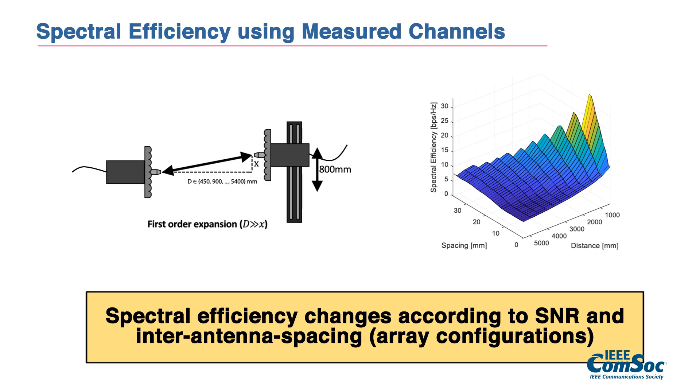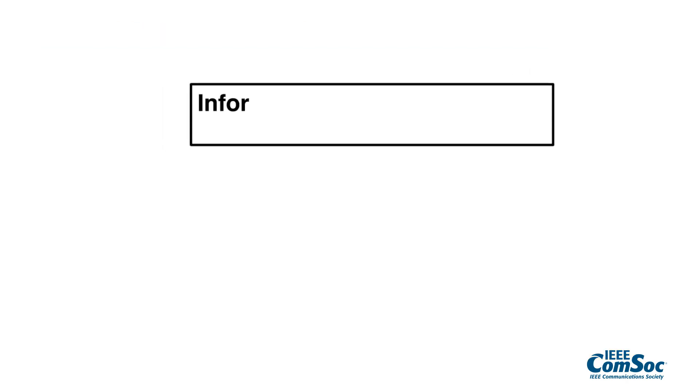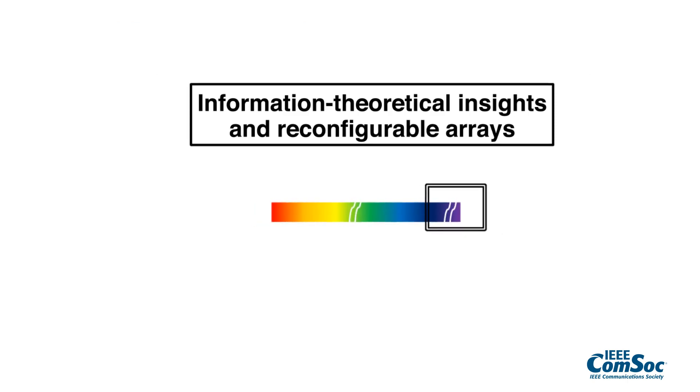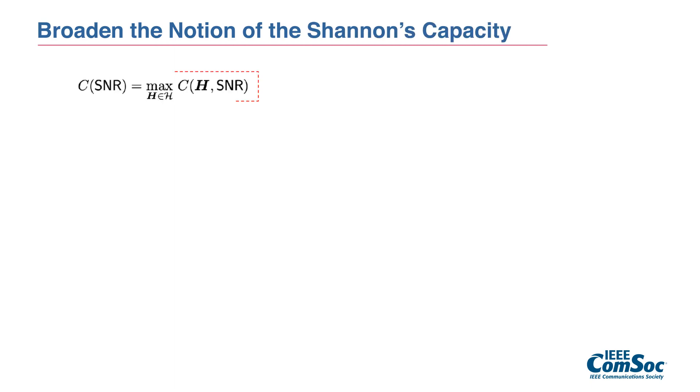As you can see, one interesting observation is that even at the same distance, the spectral efficiency changes over the inter-antenna spacing because the channel ranks are different when we choose different inter-antenna spacing. This motivates us to find optimal array arrangement to maximize the spectral efficiency from an information-theoretical perspective.